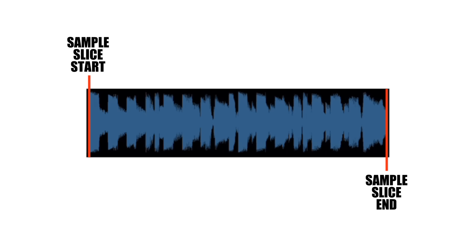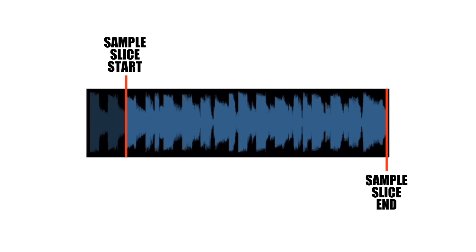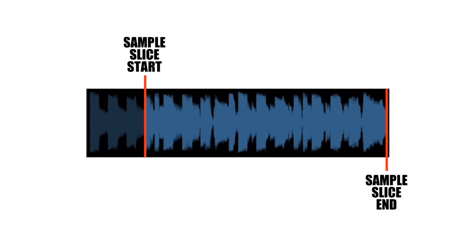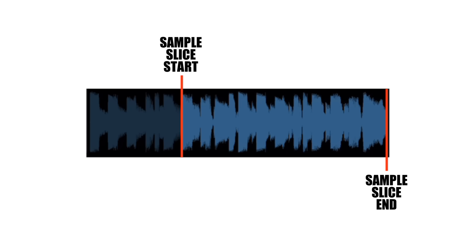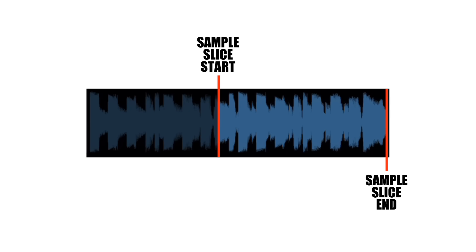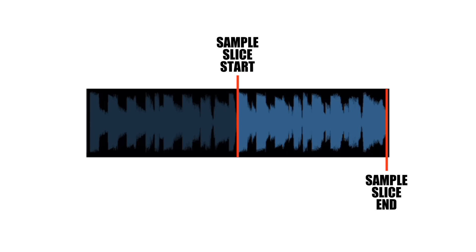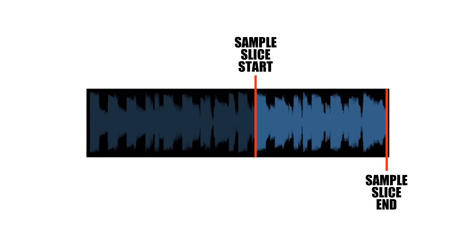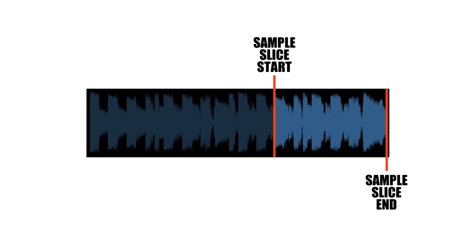Equal Slot slices the sample into equal sections using the start point. The slice endpoint is fixed to the sample end, which is useful for the sample chop to continue playing until the end of the sample, or until another sample chop is triggered. These can be manually edited if required.